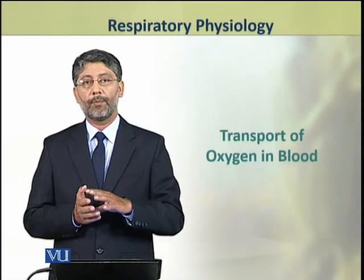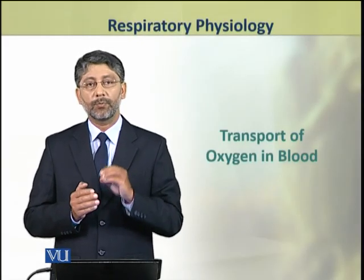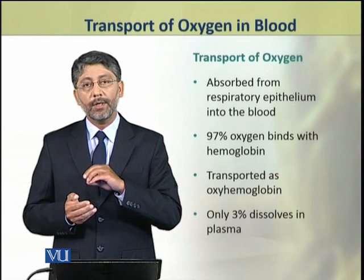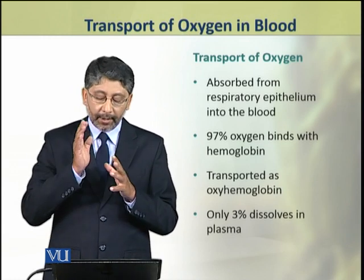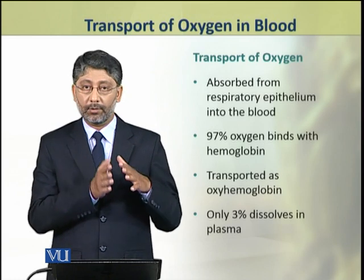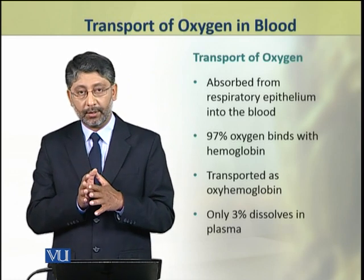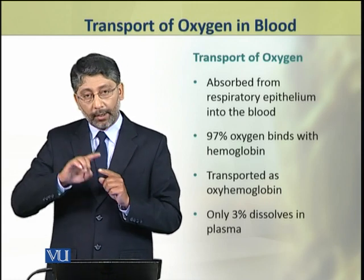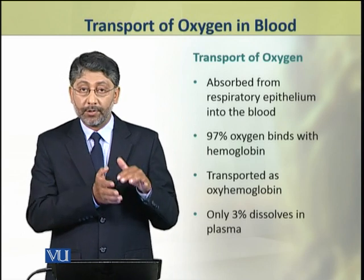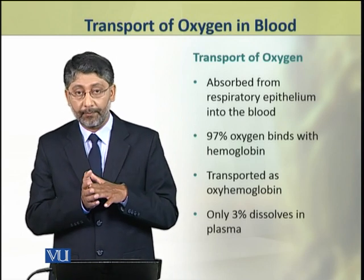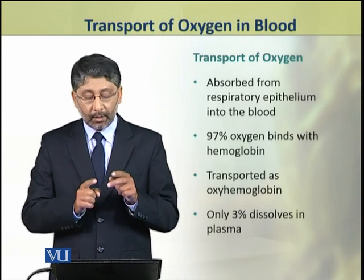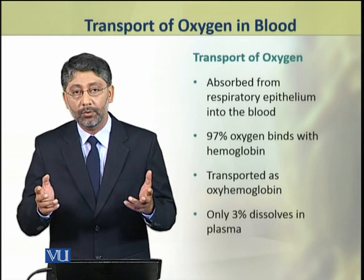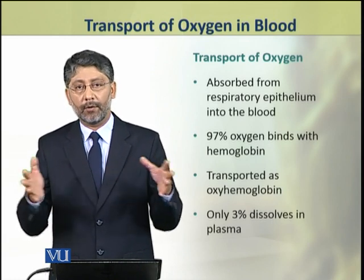In this topic we shall discuss the transport of oxygen in blood. Oxygen is absorbed from the respiratory epithelium into the blood. About 97% of oxygen absorbed binds with hemoglobin and is transported as oxyhemoglobin in the blood. But only 3% oxygen dissolves in the plasma and is carried through various plasma proteins and its water content.